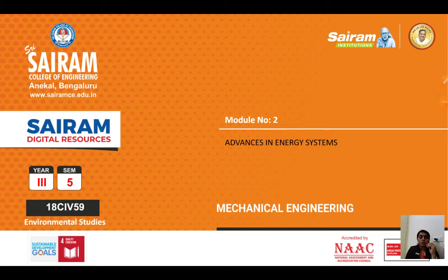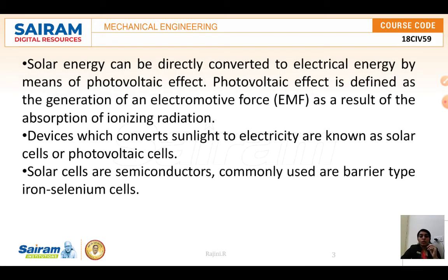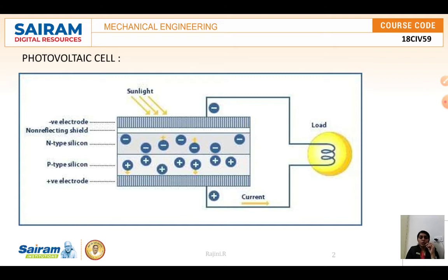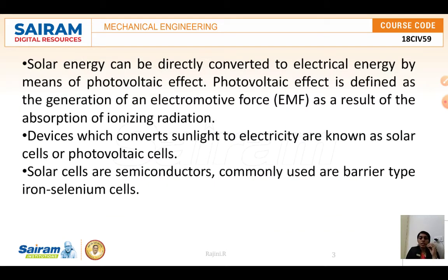In this session we are going to deal with Module 2, that is Advances in Engineering Systems. Firstly, the photovoltaic cell — a photovoltaic cell is also called a solar cell. It is an electronic component that generates electricity when exposed to photons, or particles of light. This conversion is called the photovoltaic effect.